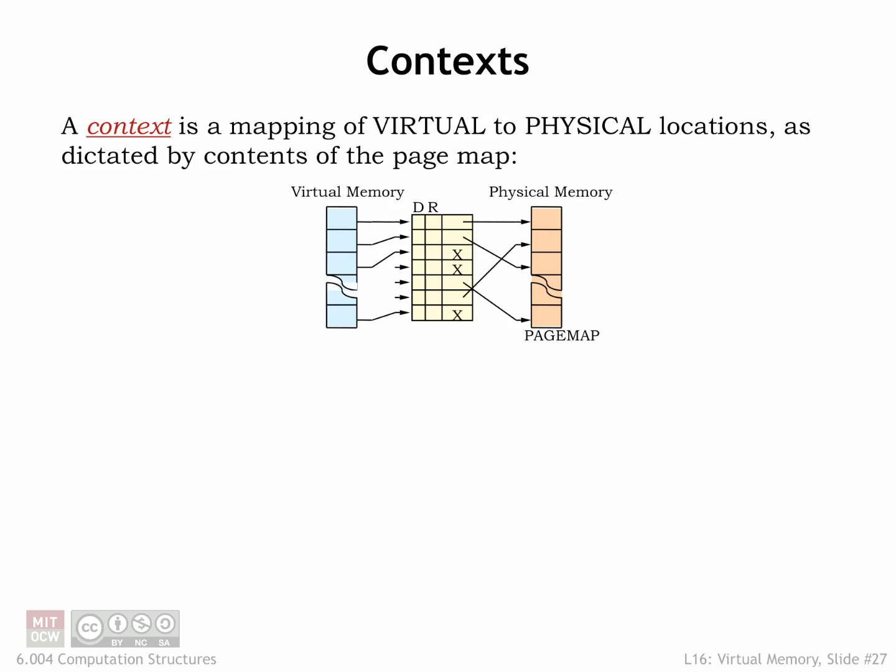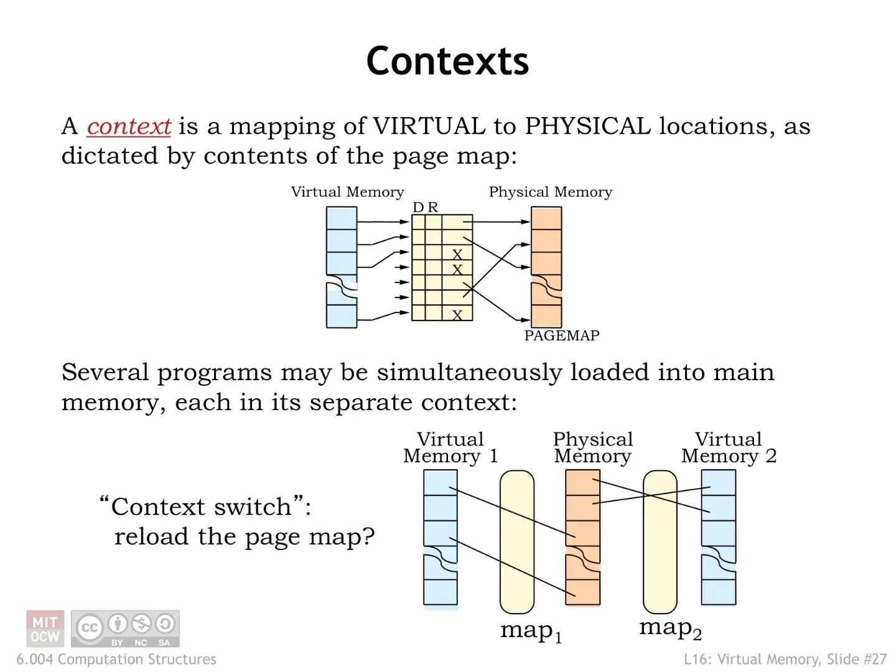The page map provides the context for interpreting virtual addresses. In other words, it provides the information needed to correctly determine where to find a virtual address in main memory or secondary storage. Several programs may be simultaneously loaded into main memory, each with its own context. The separate contexts ensure that the programs don't interfere with each other. For example, the physical location for virtual address 0 in one program will be different than in another. Each program operates independently in its own virtual address space.